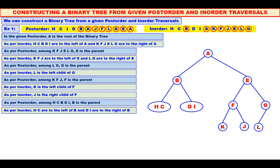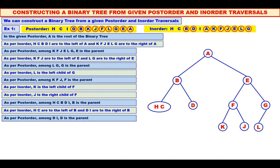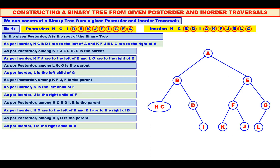Now, among D and I, which is the root? See the post-order — D is the root. We will make D as the root and we will mark it in the inorder. Observe in the inorder: I is the right child of D.